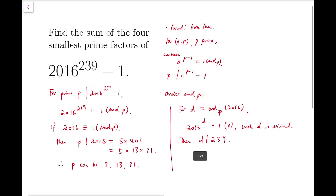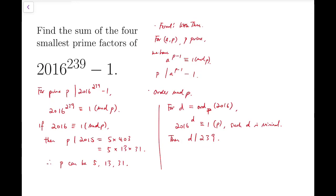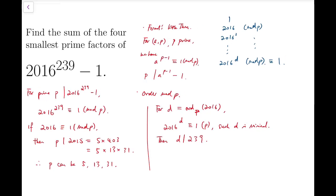Because the order tells us that the sequence of powers of 2016 mod p starts from 1, then 2016, 2016 squared, all the way to 2016 to the power d, and we do all mod p. And this equals 1 congruent to 1 mod p, and then the sequence will start to iterate.